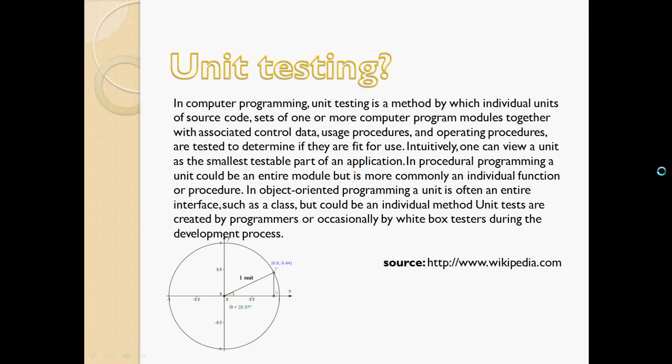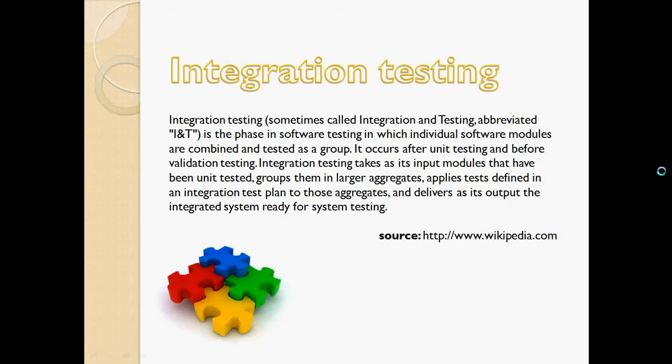Next in line is integration testing, which follows a logical sequence. Integration testing is taking two units that work together, putting them together, and testing their functionality as how they work together. It doesn't have to just be two units — it could be more. So integration testing is taking two or more functional units, putting them together, and seeing if they work together as they should.